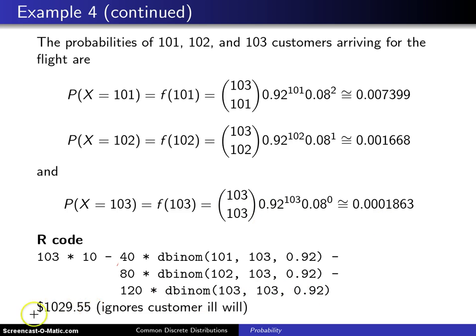And it turns out you will have an expected profit of 1029 dollars and 55 cents. So the thinking here is here is our 1030 expected profit. It goes down by 45 cents to 1029.55 when you overbook in that fashion and so this all assumed that we sold 103 tickets.